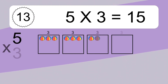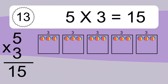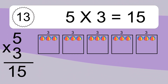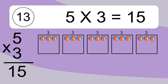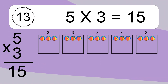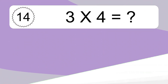5 times 3 equals what? 5 times 3 equals 15. We have 5 boxes and each box has 3 colorful balls inside. If you count all the balls in all the boxes together, you will have 5 times 3 balls. This equals 15 balls.